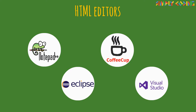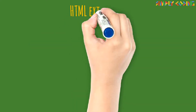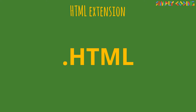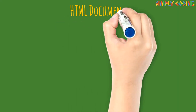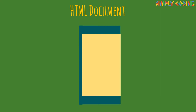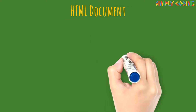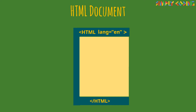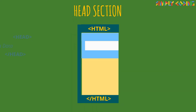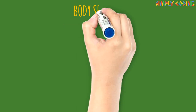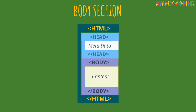Any of these can be used to edit an HTML file, which is usually written with the extension .html. Every HTML document follows the following structure: it is enclosed within an HTML tag which identifies the document as an HTML document, with an optional attribute to specify the language. Next is the head tag, which contains the metadata — information about the webpage and instructions for browsers that is not directly visible on the page. The body contains your actual content which needs to be displayed.